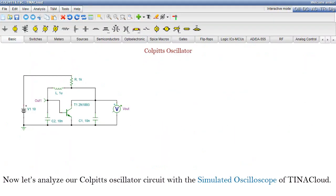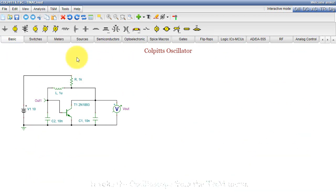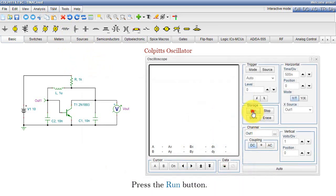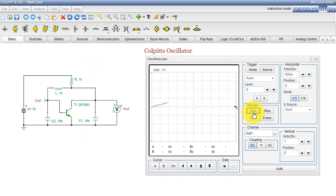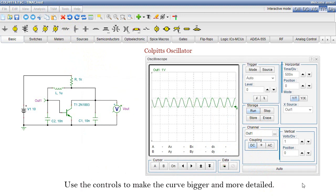Now let's analyze our Colpitts oscillator circuit with the simulated oscilloscope of TinaCloud. Invoke the oscilloscope from the TNM menu. Press the Run button. The Out1 signal appears. Use the controls to make the curve bigger and more detailed.